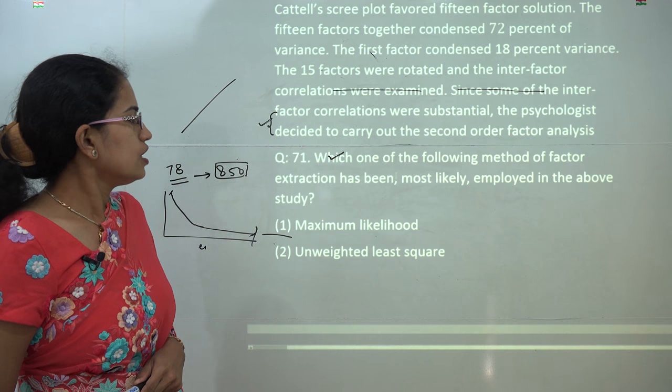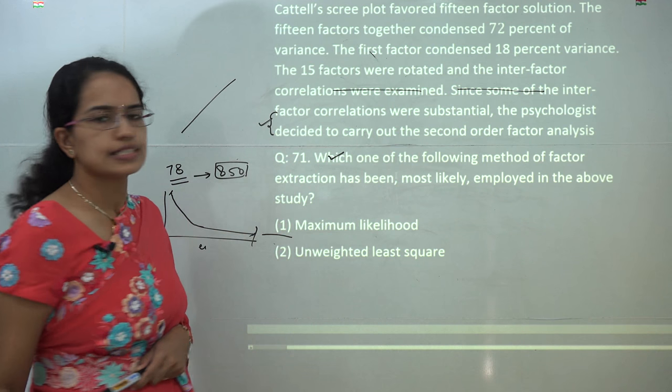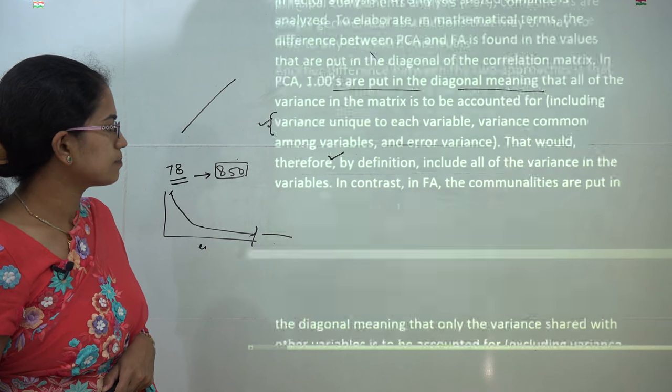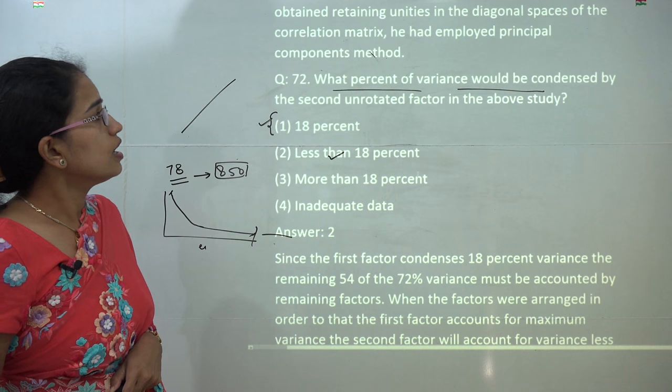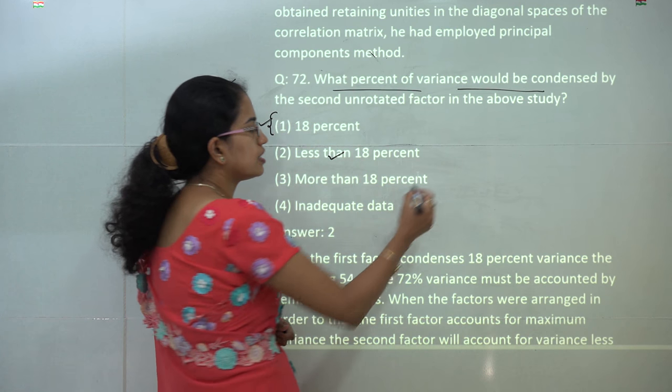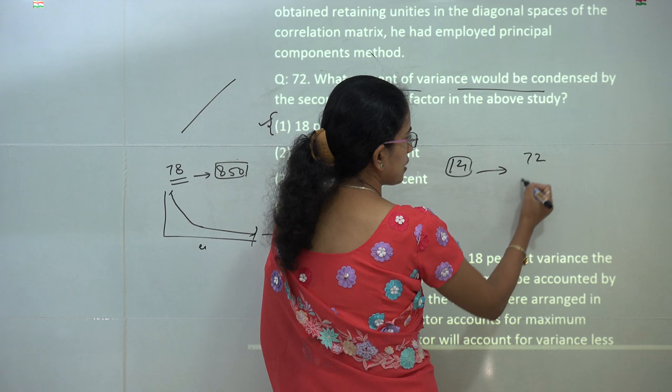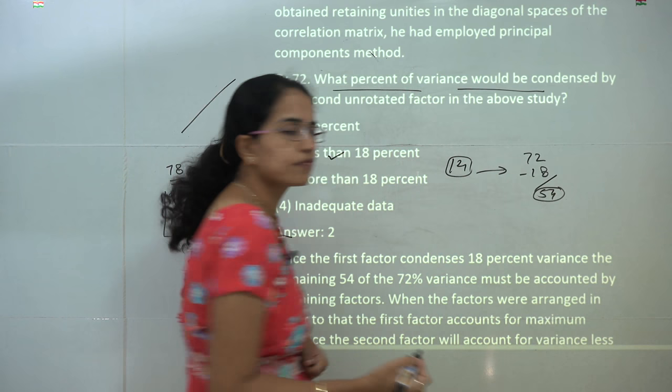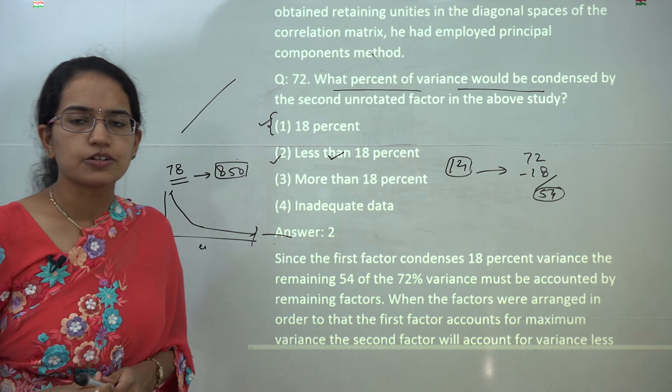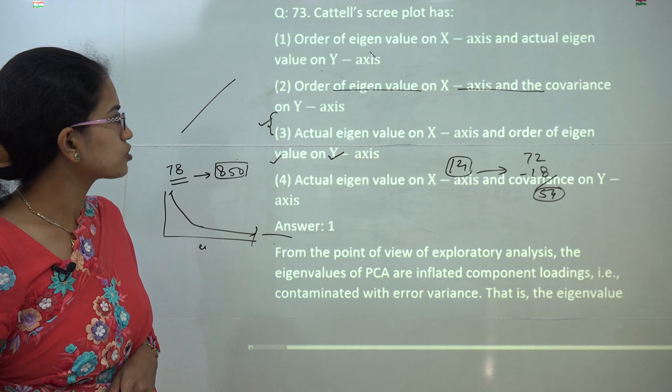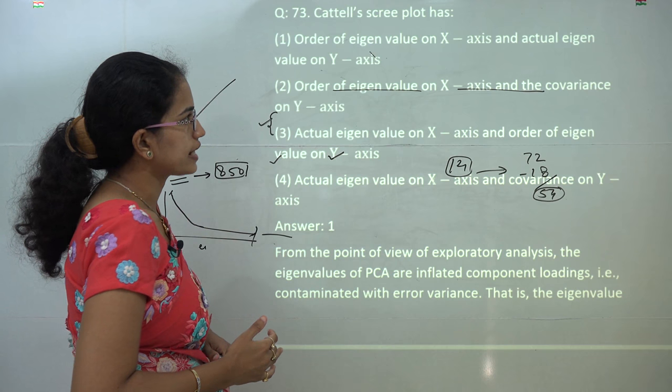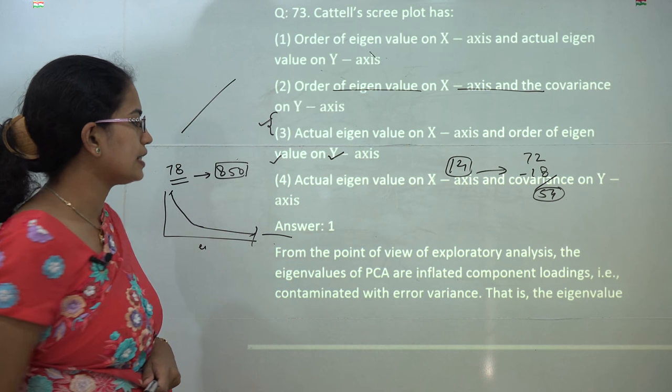Now based on this, let's come on to the questions first. So which of the following method of factor extraction is most likely? Since we said we are retaining the unities, the correct answer here would be principal component method. So 3 would be the correct answer. Now the next question talks about what percent of the variance would be condensed by the second unrotated factor. So the first factor condenses 18 percent of the variance. Now for the remaining 14 factors, how much variance is left? So 72 was the original, 18 percent already condensed. So you have only 54 percent of the variance that's left for the next 14 factors. And therefore, for the next factor, the second unrotated factor, it would be less than 18 percent.